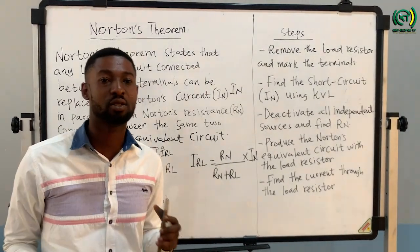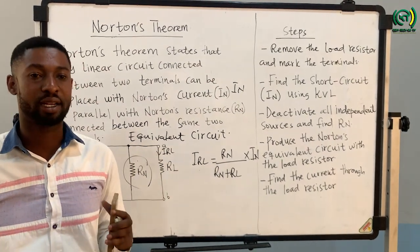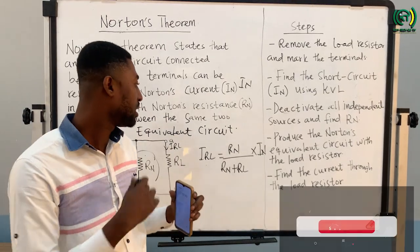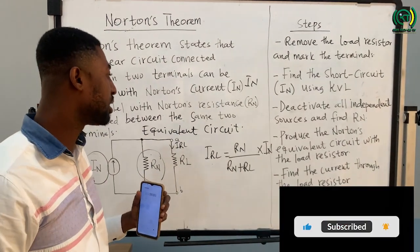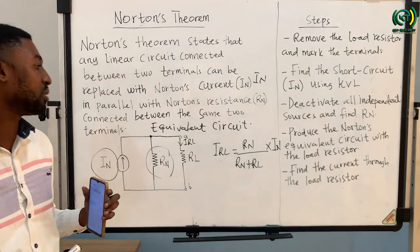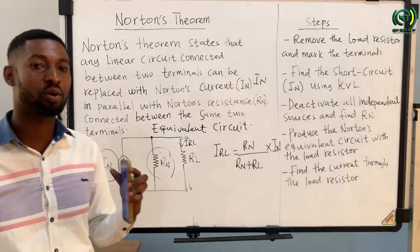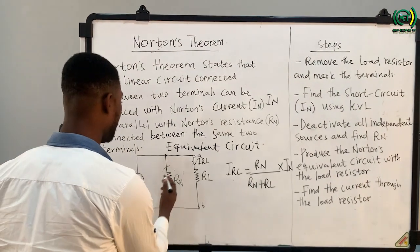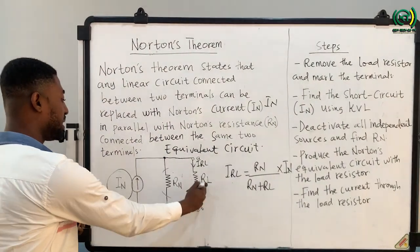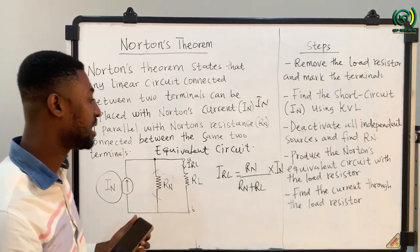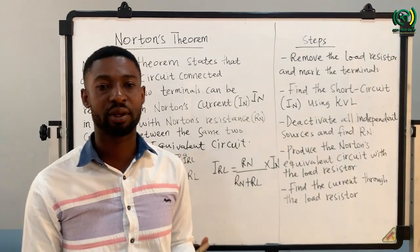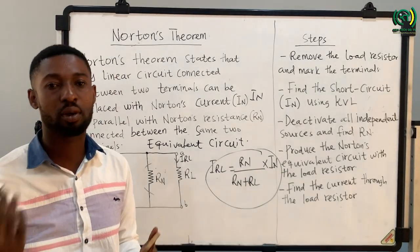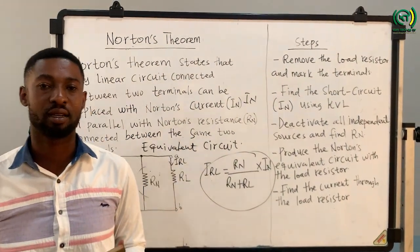Thirdly, we are supposed to deactivate all the independent sources and find RN, which is the Norton's equivalent resistance. Then we produce the Norton's equivalent circuit with the load resistor connected in parallel with the Norton's resistance. Lastly, we calculate the current flowing through the load resistor using the current divider formula.